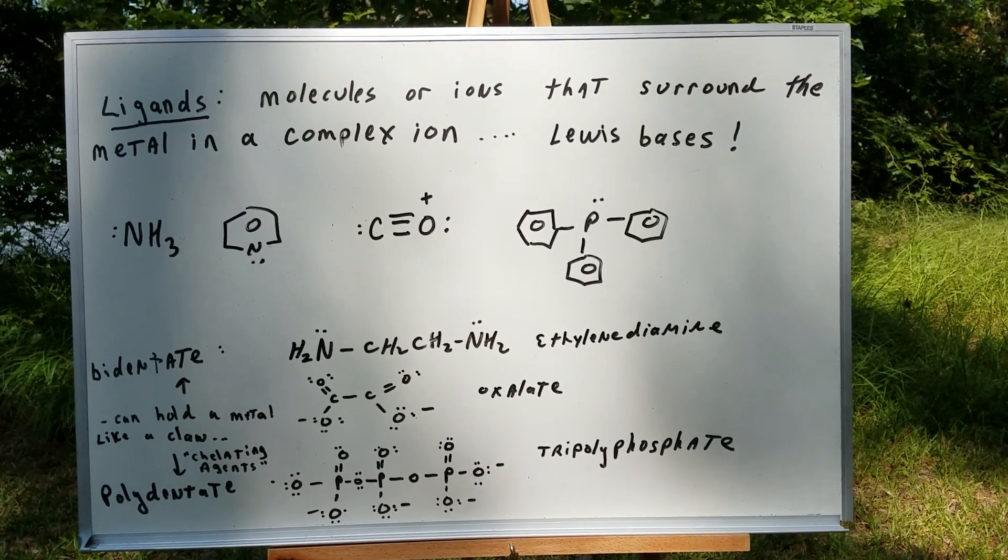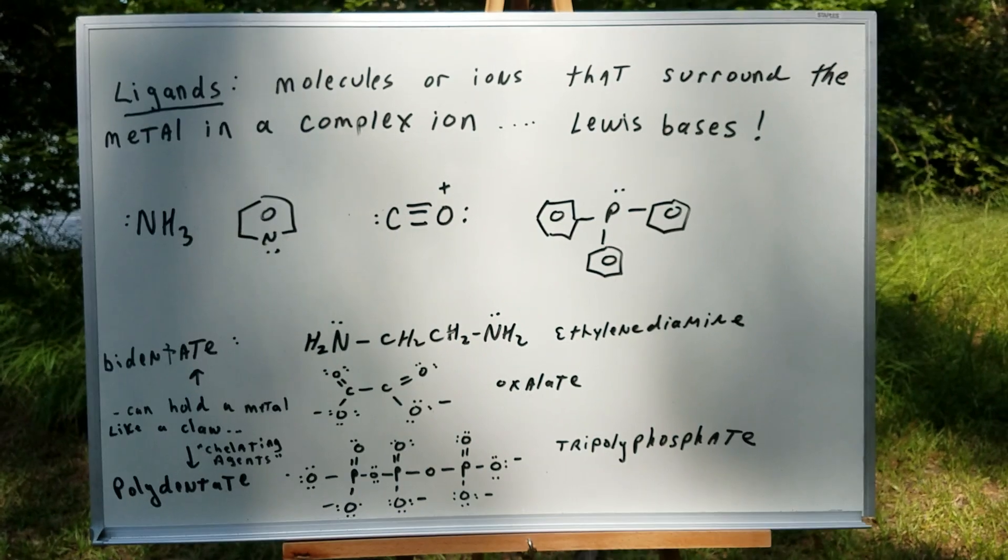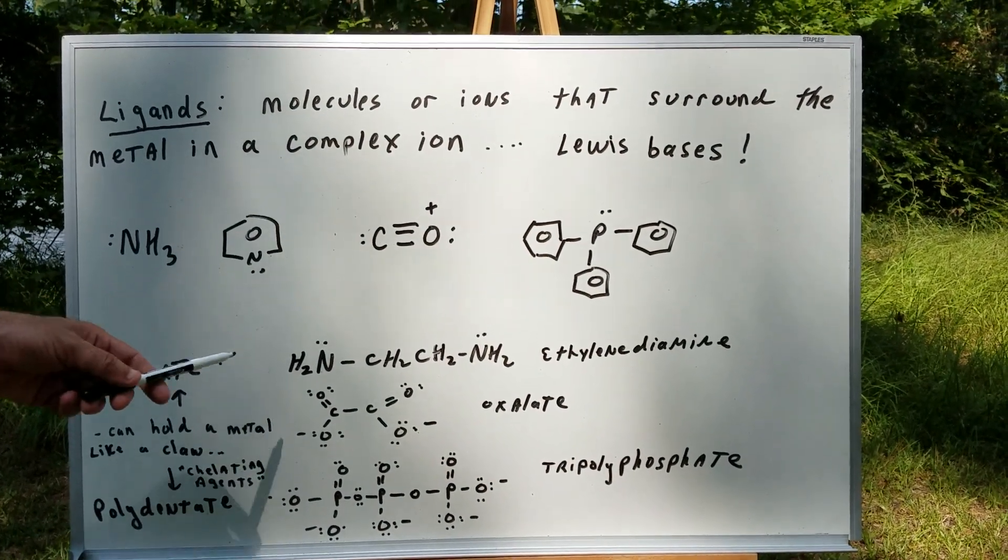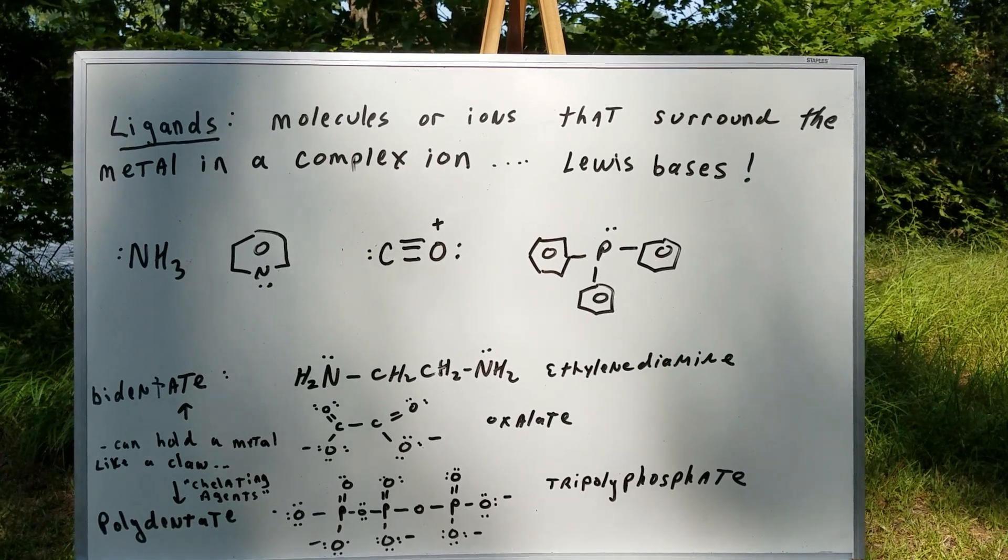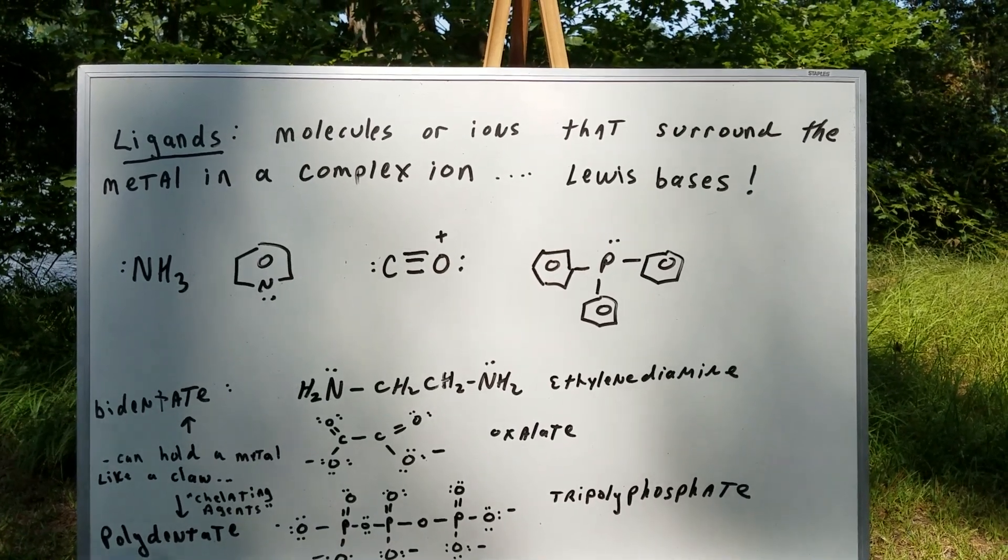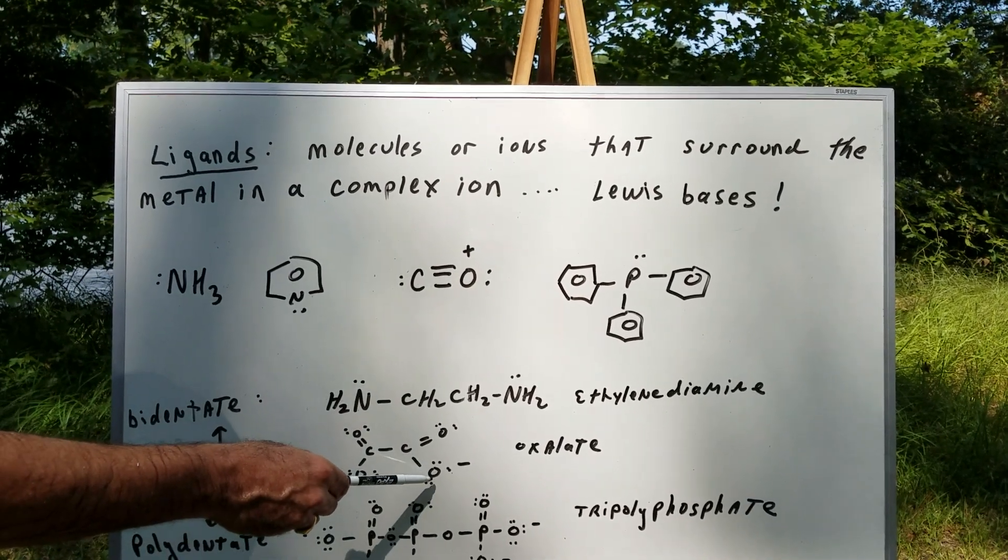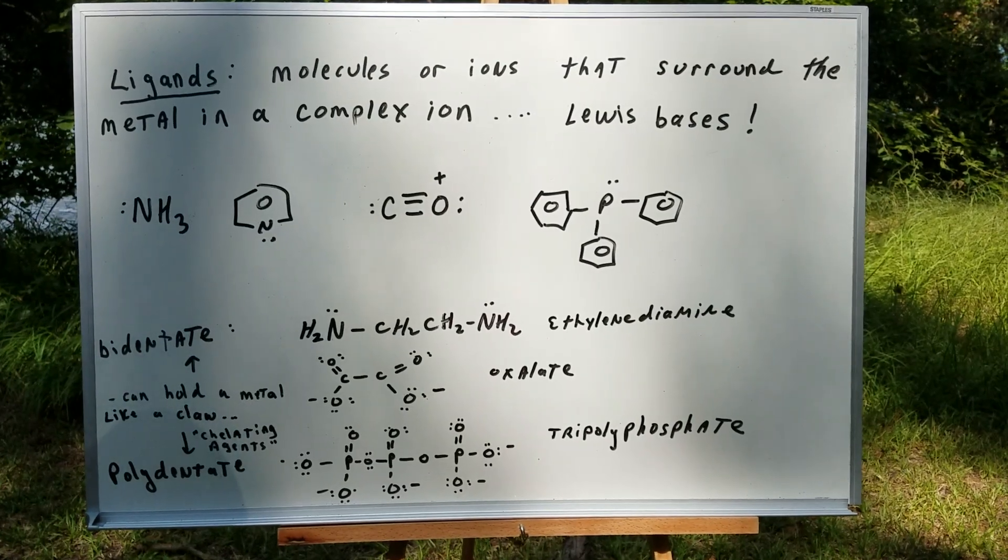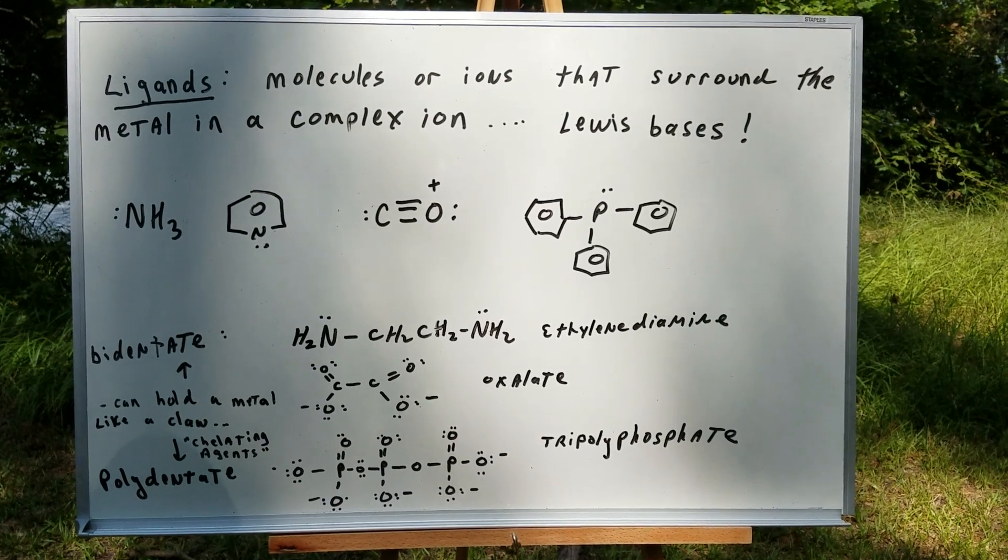These can actually hold a metal like a claw and we sometimes call these chelating agents, and an example would be here, this diamine, this is ethylenediamine. Or here you can see we can bind metals from here and here. There's two spots or two teeth, so we would call this the oxalate ion.